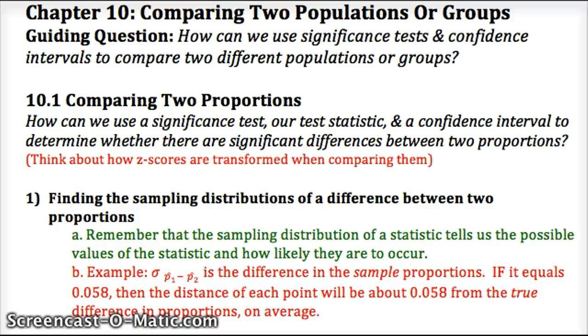We're looking at the sampling distribution of a difference between two proportions. Remember the sampling distribution would be a specified sample size n and would tell us how the statistic varies in all possible samples of that size. Think about all the rules we studied for transformations, how variances always add to determine spread, how our center would be the center of our first distribution minus the center of our second, and how our shape would depend on the two original distributions.